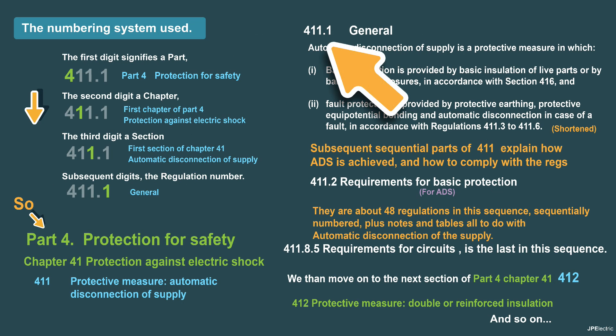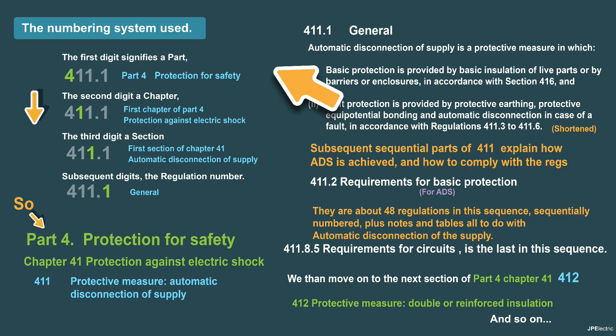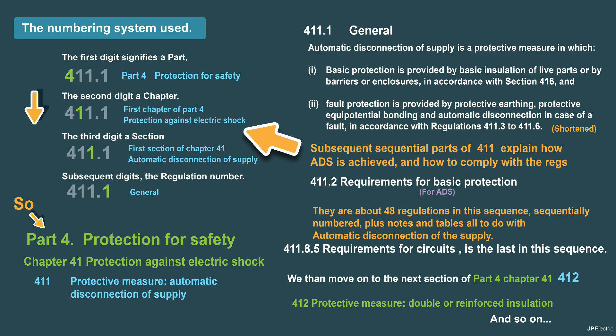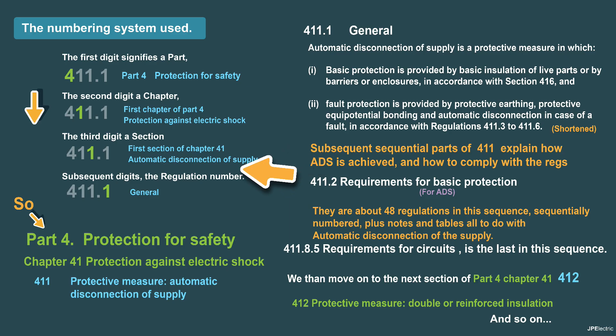So we have a regulation number: 411.1. How does that come about? The first digit signifies a part — part 4, protection for safety. The second digit is a chapter, so 411 will be the first chapter of part 4, protection against electric shock. Then the third digit, 1, will be the first section of chapter 41, automatic disconnection of supply. Then any subsequent numbers after that will be the regulation number, 411.1.